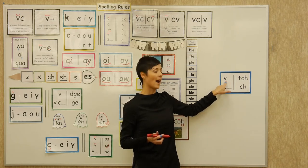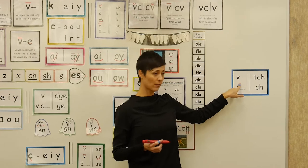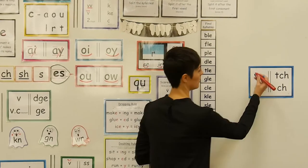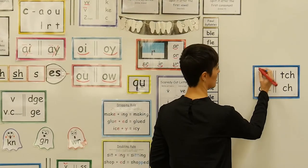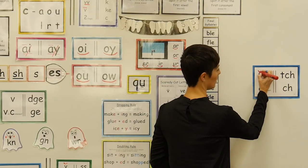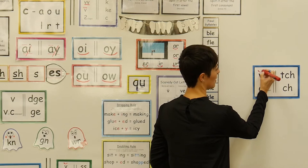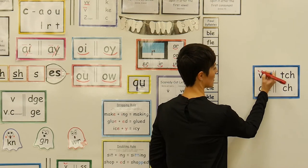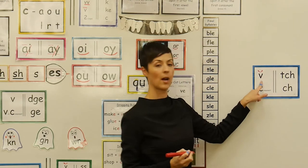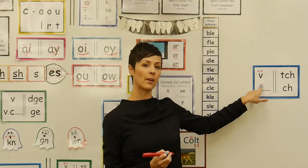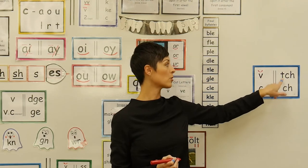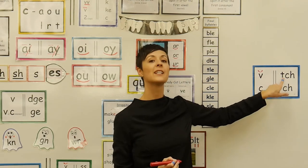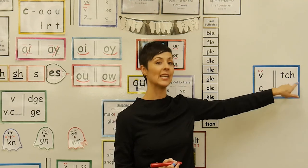We teach them that after a short vowel — and of course we'll code it with a breve to remind us that that's a short vowel — after a short vowel, we're going to use the trigraph tch.